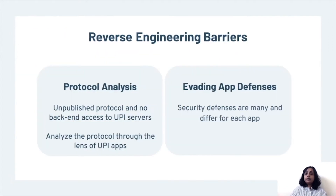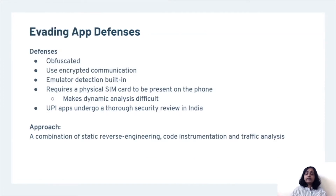To do this, we had to overcome two significant reverse engineering barriers. The first is that the protocol itself was unpublished and we had no backend access to UPI servers. Hence, to analyze the protocol, we had to study the payment apps that integrated with UPI. But these apps were designed with security in mind and evading these app defenses was non-trivial. For instance, these apps were all obfuscated, used encrypted communication, had emulator detection built in, and also required a physical SIM card to be present on the phone. This deterred dynamic analysis totally. Finally, the UPI apps undergo a thorough security review in India before they are published. As a result, our approach to analysis is the combination of static reversing, code instrumentation, and traffic analysis depending on the defenses built into the app.